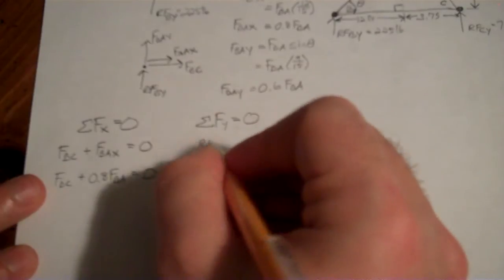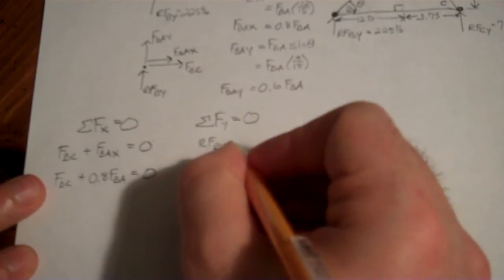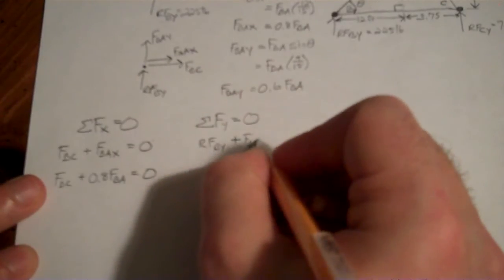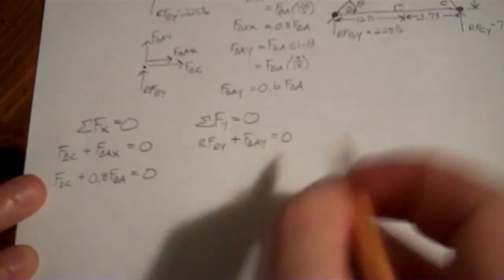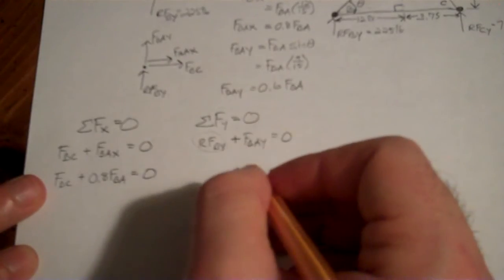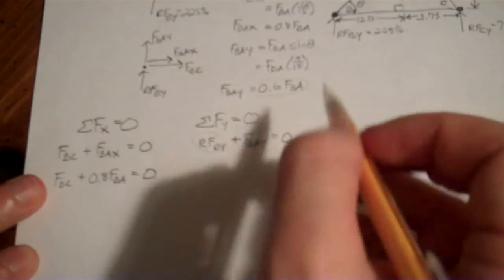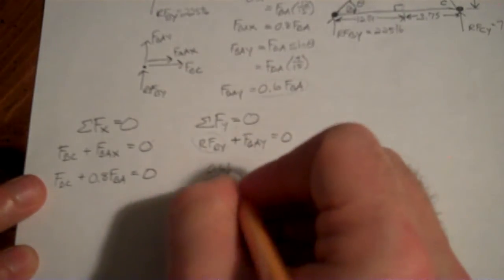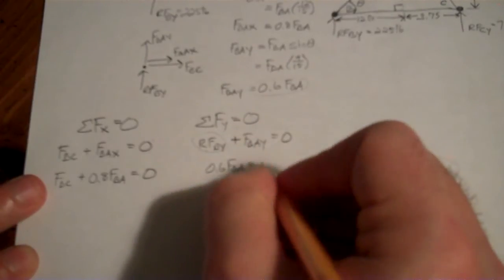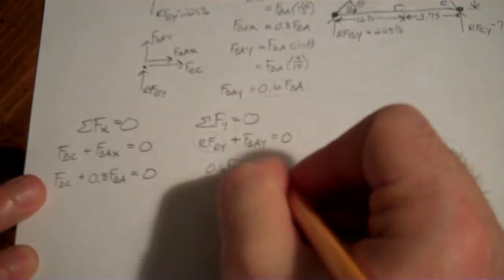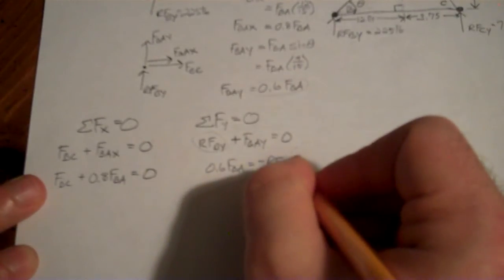That's okay, because I'll start summing the forces in the Y. So the forces in the Y direction also have to equal 0. So RFBY plus FBAY has to equal 0. Now I know RFBY, so FBAY—we've calculated that over here, that's 0.6 times FBA. I'm going to take RFBY to the other side. Excuse me, if I'm taking it to the other side, I need to throw a negative in there, RFBY.